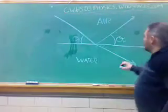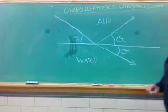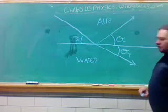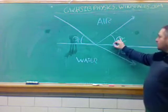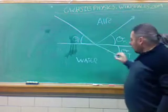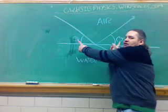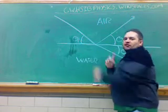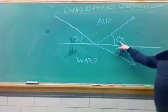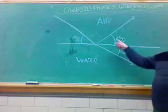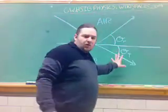An important thing to note is that the angle of the transmitted ray is not equal to the angle of incidence, and it's also not equal to the angle of reflection. So these angles don't necessarily have to equal each other. We know that the angle of incidence and the angle of reflection are equal, but the transmitted angle is not equal to either one of those — it's its own angle.